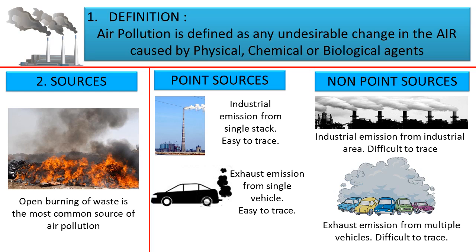Once we have defined air pollution, it is important to point out the major sources. The most common form of air pollution is the open burning of waste, which is especially dangerous when the waste contains toxic materials, plastics and vulcanized rubber tiles, which can release dioxins, sulfur and unburnt carbon particles into the air. The sources of air pollution can be studied under point sources and non-point sources. For example, exhaust emissions containing nitrous oxides, sulfur oxides and carbon monoxide coming excessively from a single car can easily be identified and controlled — this is a point source.